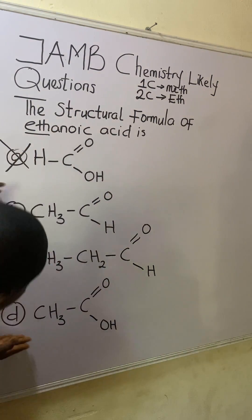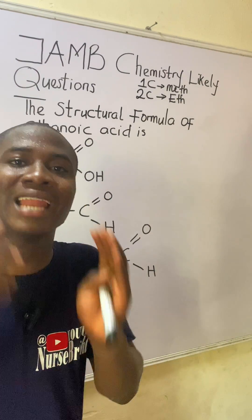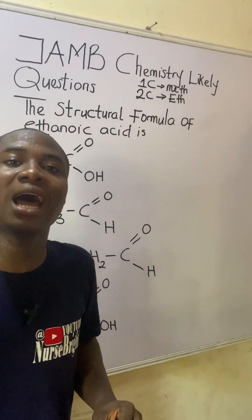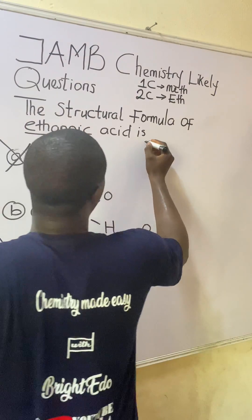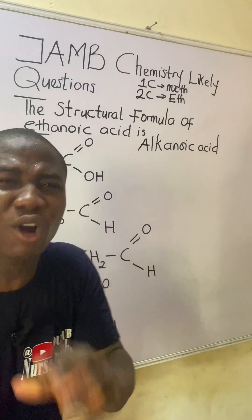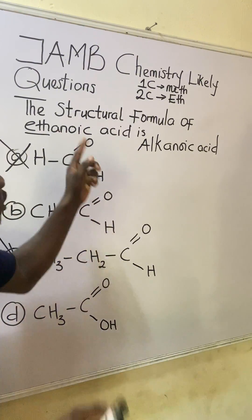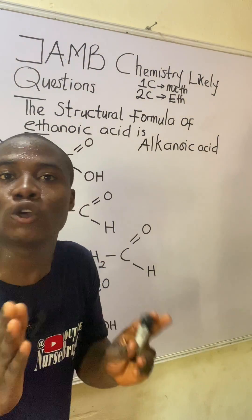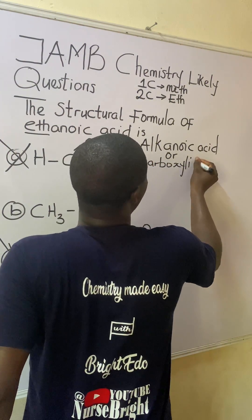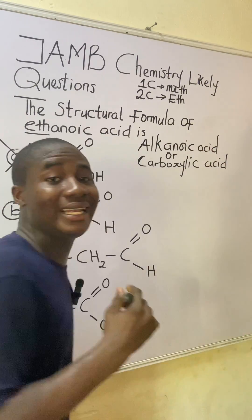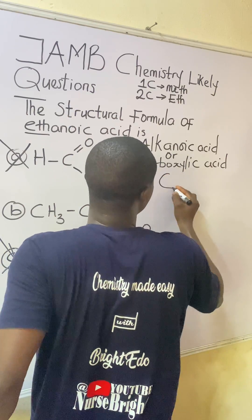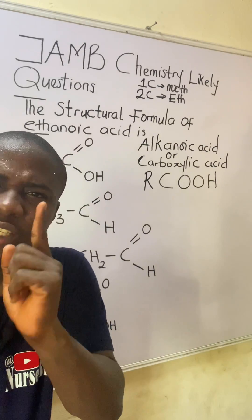Now we have to understand which family ethanoic acid is from. Ethanoic acid belongs to the family of organic compounds called alkanoic acids — note the ending 'noic.' Alkanoic acids are also called carboxylic acids. They have the general formula R-C(=O)-OH, where R signifies the alkyl group.